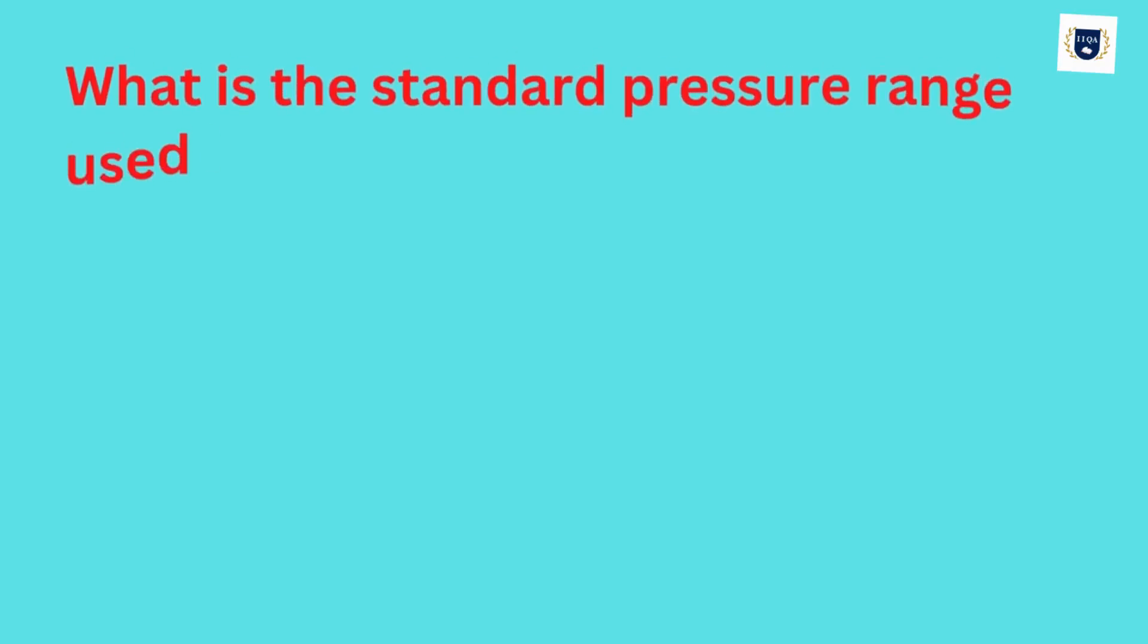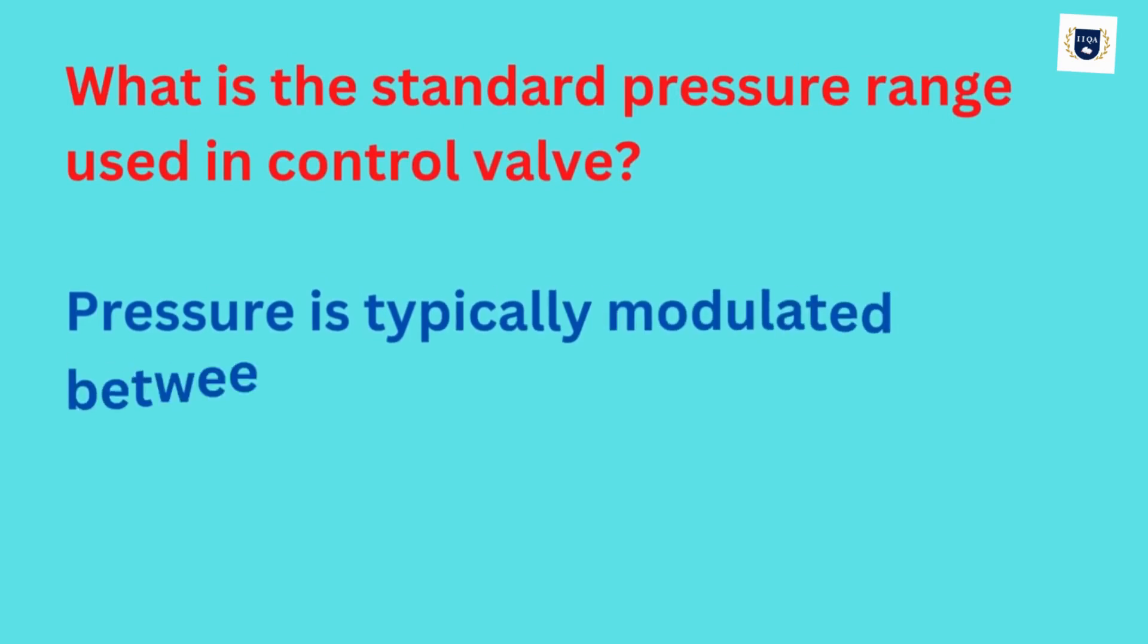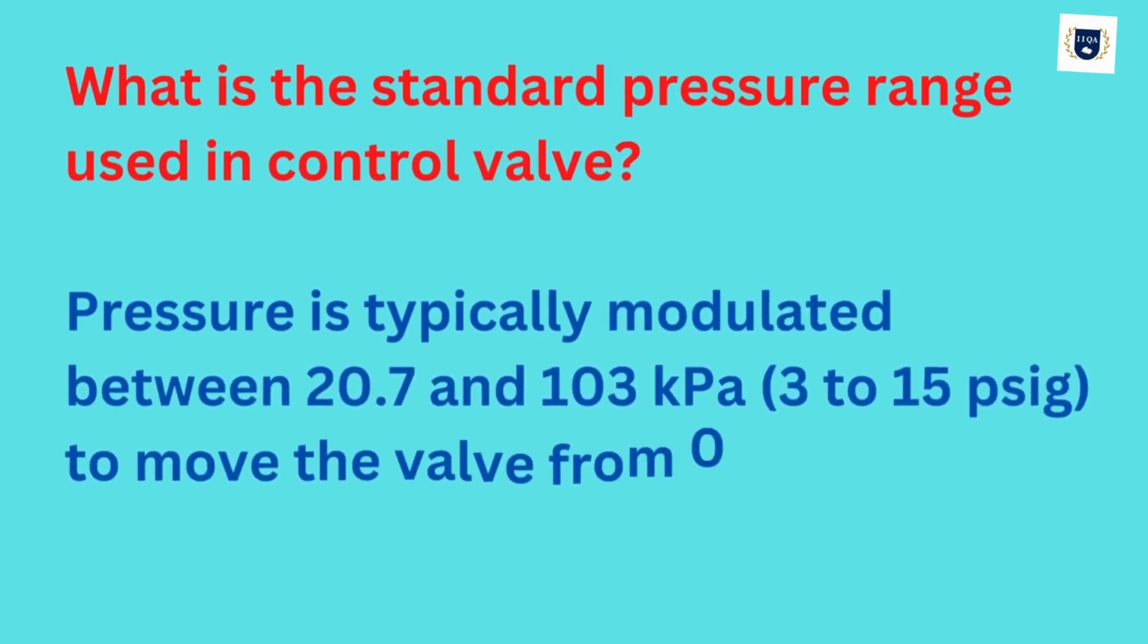What is the standard pressure range used in control valves? Pressure is typically modulated between 20.7 to 103 kPa, or 3 to 15 psi, to move the valve from 0 to 100% position.